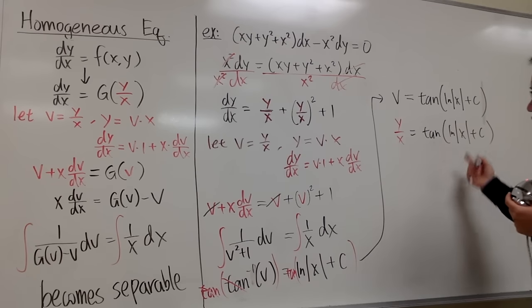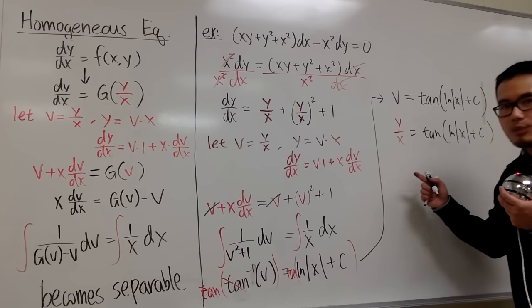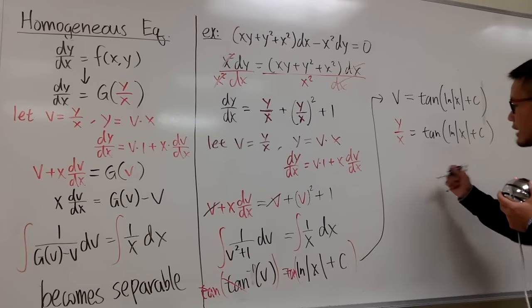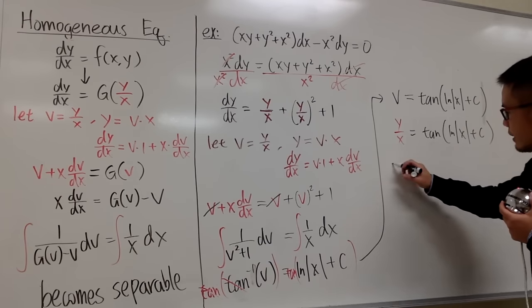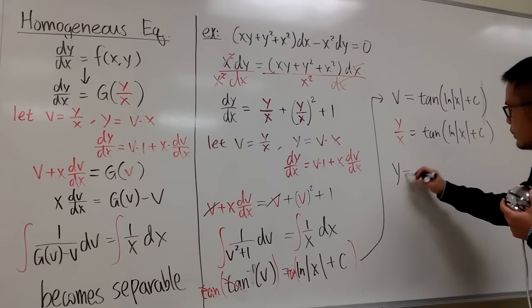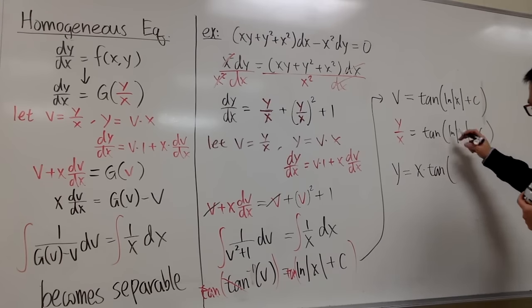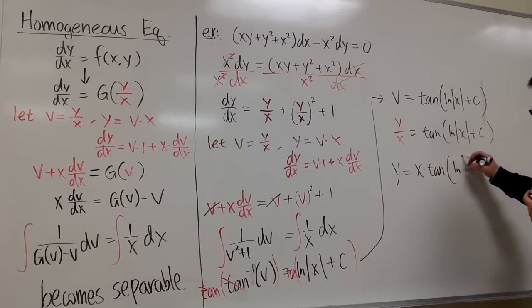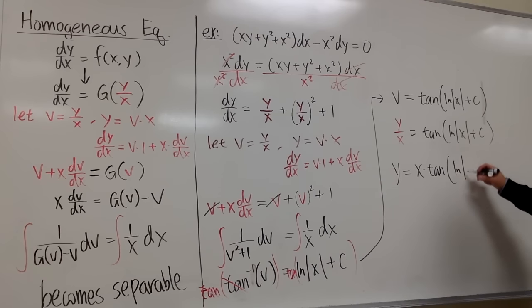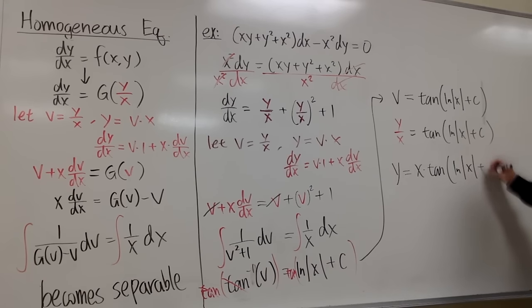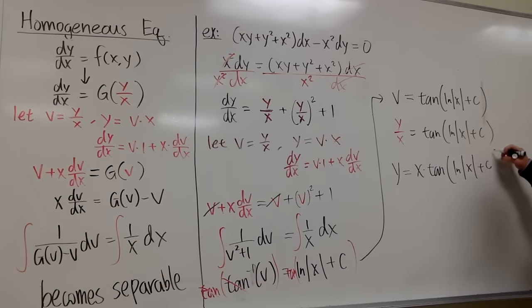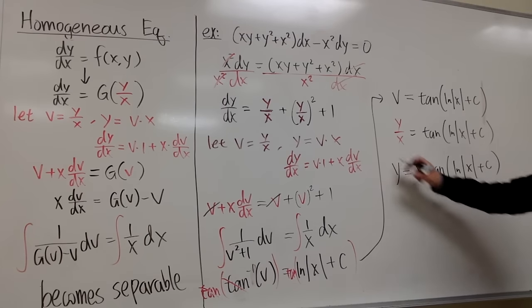Multiplying both sides by x, the final answer is y equals x times tangent of (ln|x| + c). And we are done.